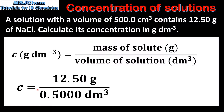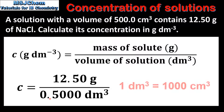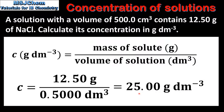We substitute the values into the equation. The mass of sodium chloride is 12.50 grams and the volume of the solution is 500 cubic centimeters. Because the concentration is measured in grams per cubic decimeter, we need to convert cubic centimeters to cubic decimeters by dividing by 1000. So 500 cubic centimeters is 0.5 cubic decimeters, giving a concentration of 25.00 grams per cubic decimeter.